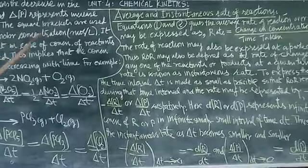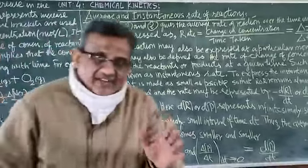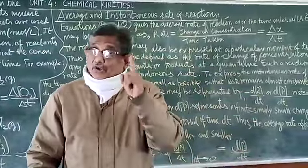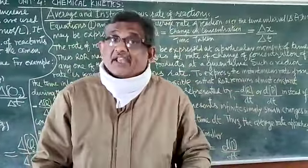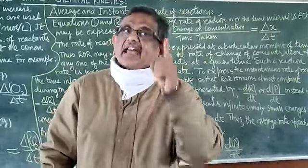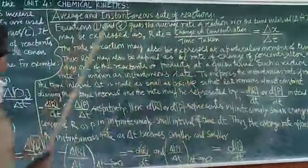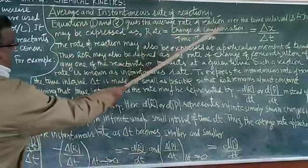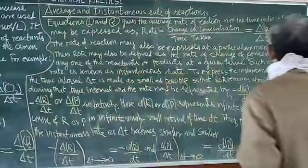Now we come to the two types of rates: the average rate and the instantaneous rate. The two equations I told you earlier — equation number 1 and 2 — represent the average rate of reaction. Equations 1 and 2 give the average rate of reaction over the time interval delta T. This may be expressed as rate equal to change in concentration upon time taken, that is equal to delta X upon delta T.